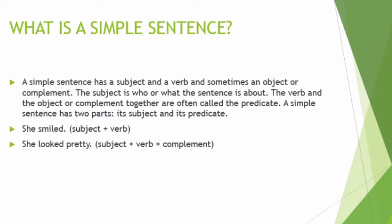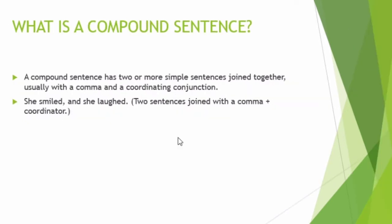Moving forward to compound sentences — just as combining two elements in chemistry makes a compound, in English, two simple sentences joined together make a compound sentence. A compound sentence is basically two or more simple sentences joined together, usually with a comma and a coordinating conjunction. A conjunction is a connector — like a bridge that joins two things together.